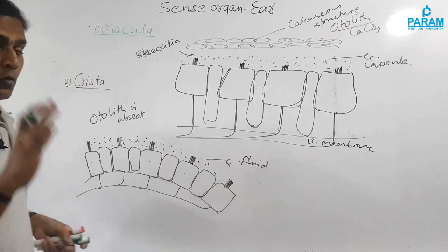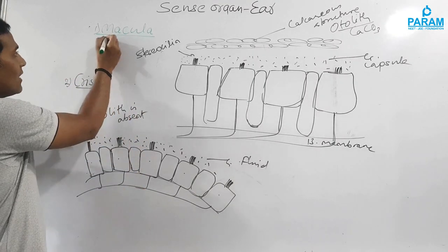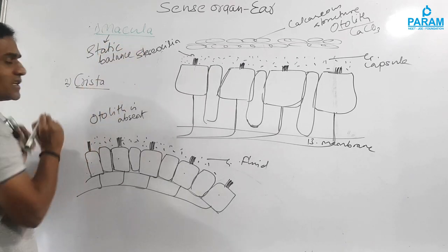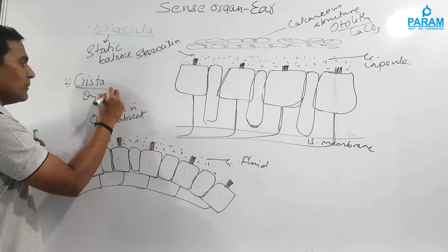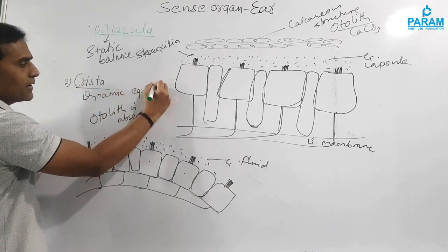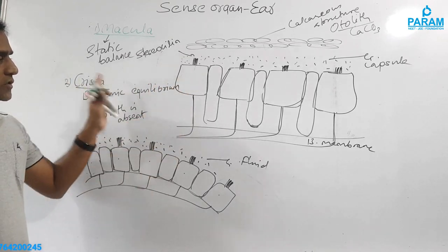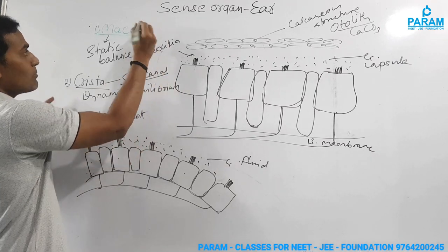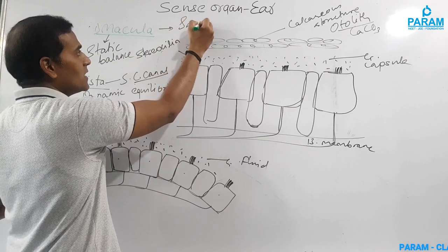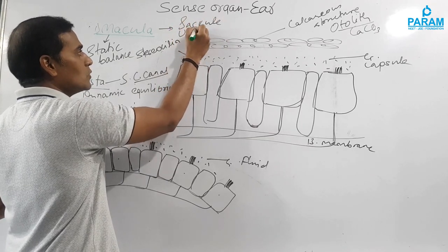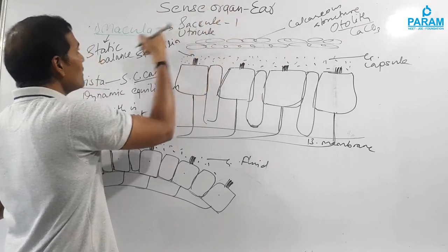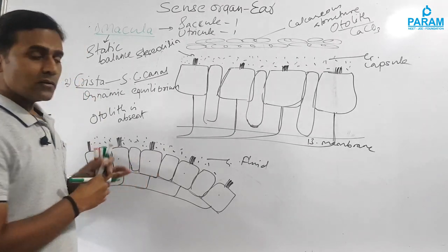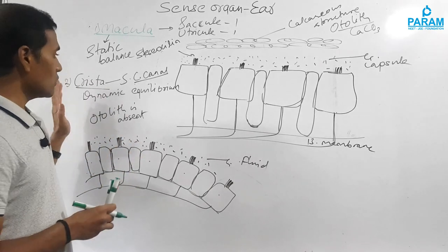To summarize: macula is responsible for maintaining static equilibrium (static balance) and cristae are responsible for maintaining dynamic balance (dynamic equilibrium). The cristae are associated with the semicircular canals, while the macula is present in the saccule and utricle — one macula in each. There are three cristae, corresponding to the three semicircular canals.